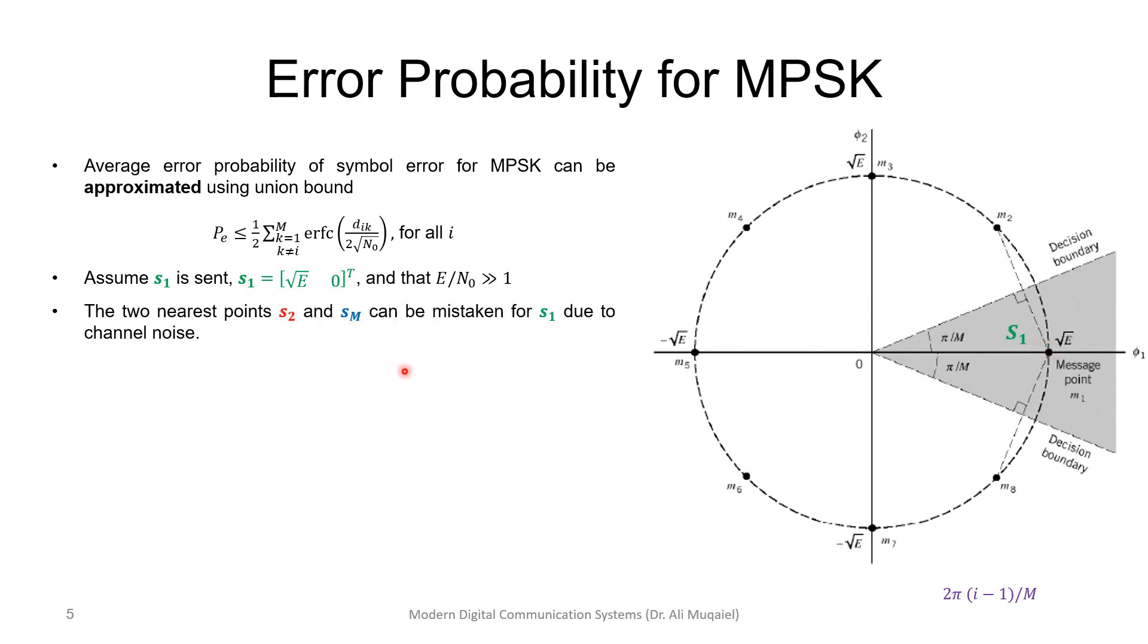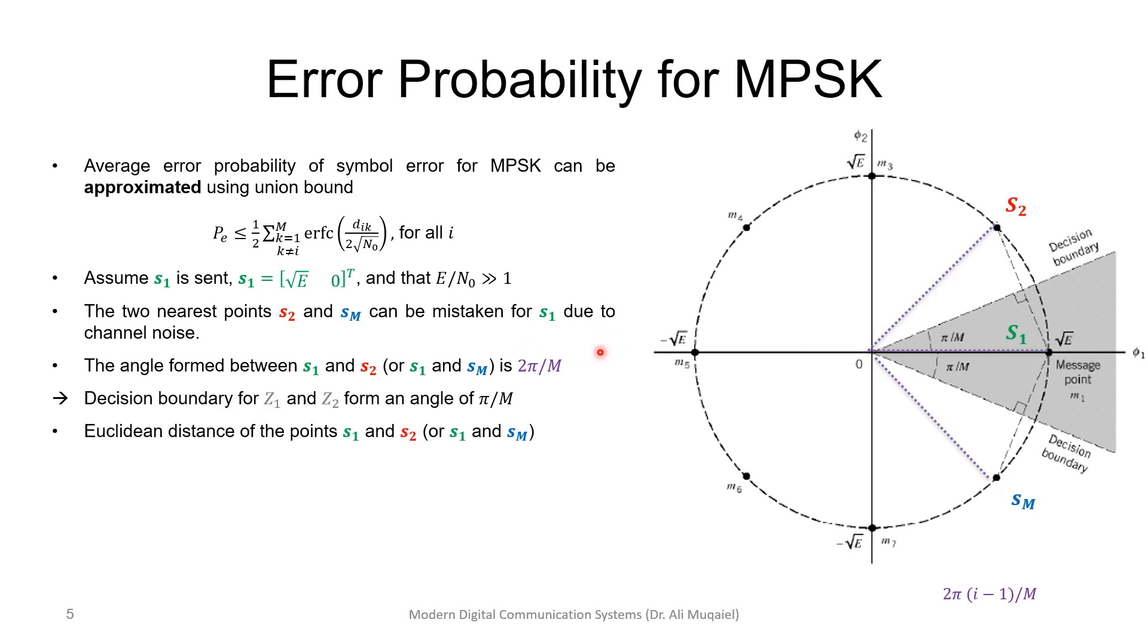We can represent this point as a vector in green, so this is s1, and the closest two points where we can do mistakes are s2 or sm—these are the nearest two ones. Assuming of course this is the closest two distances, these are far, and the probability will become less, especially if the signal energy or signal-to-noise ratio is relatively large, because the signal is strong and there is less probability of going away. The angle formed between s1 and s2 is two pi divided by M. So the angle is two pi divided by M. This is pi over M, but from here to here it will be two pi divided by M. Now the decision boundaries z1 and z2 are shown.